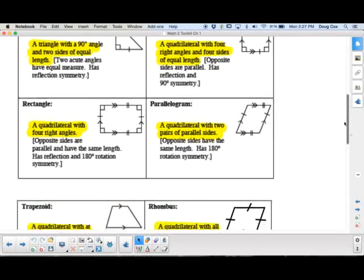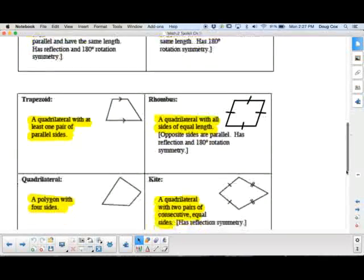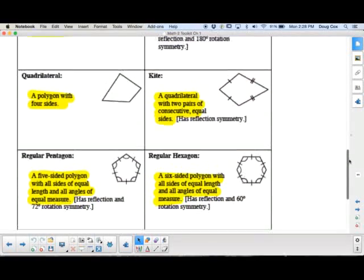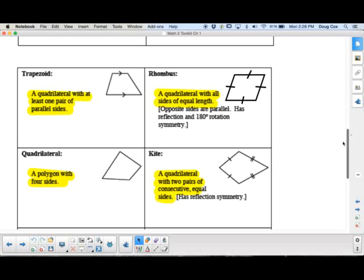Turning to the next page, we have some more figures. We have the trapezoid, which is a quadrilateral that has at least one pair of parallel sides, usually top and bottom, but not always.